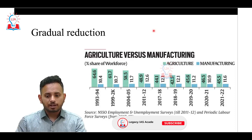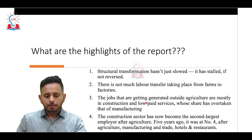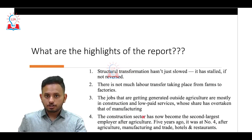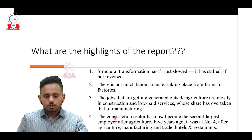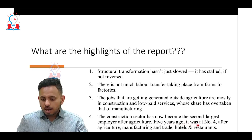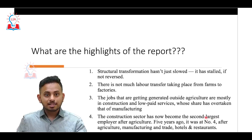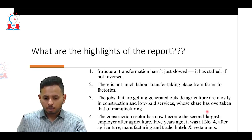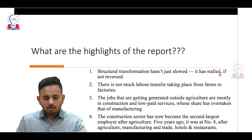The answer lies in the construction sector, which is booming. Construction has now become the second largest employer after agriculture. The majority of people who left agriculture joined the construction sector. Before, construction was ranked fourth, but now it employs the second largest percentage of the Indian population. This shows the structural transformation has not just slowed — it has stalled, if not reversed.